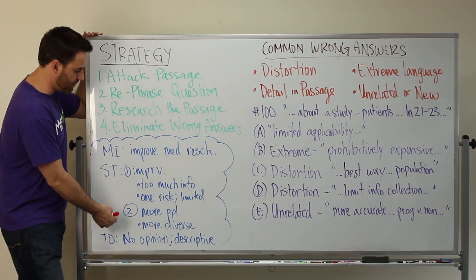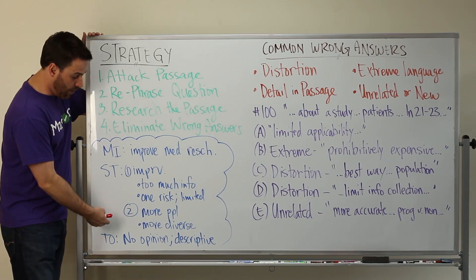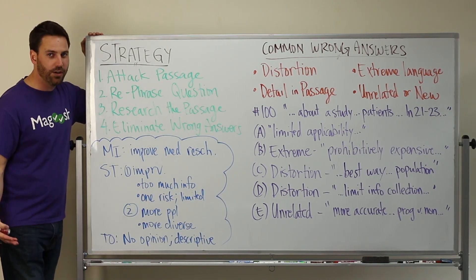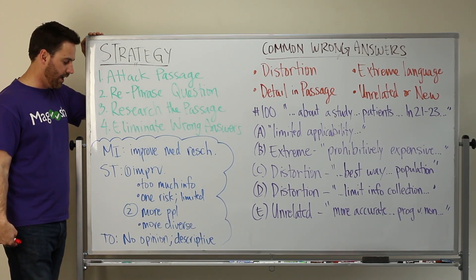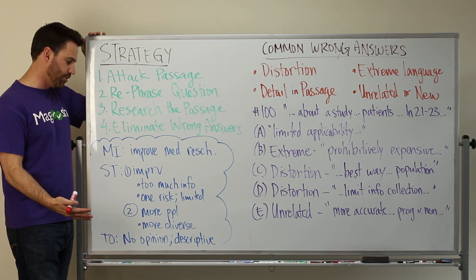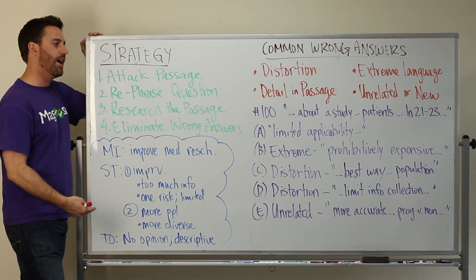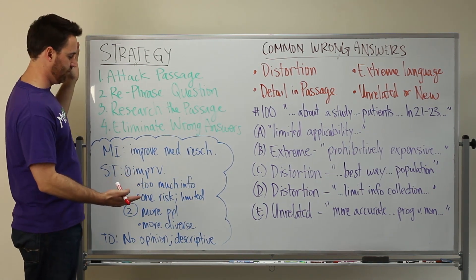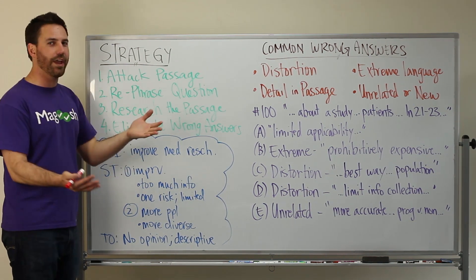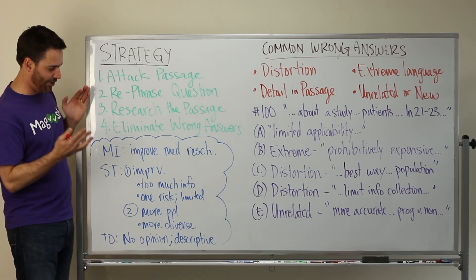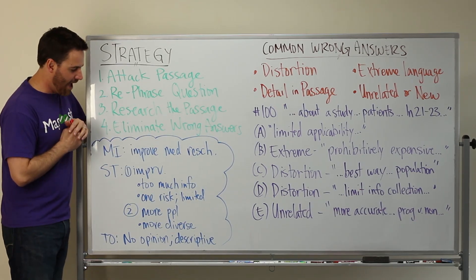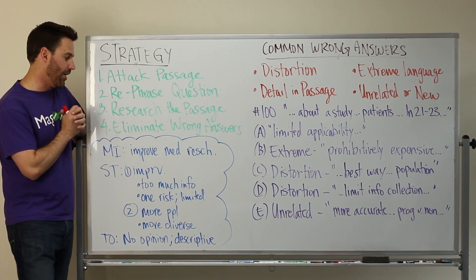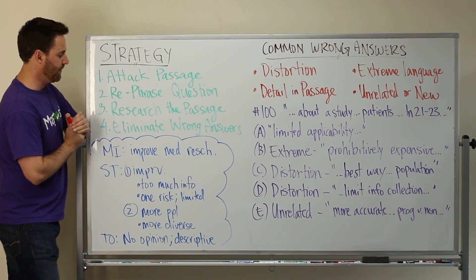We can do some research of the passage to see what they're talking about. So in paragraph two, they're talking about having more people in a research group so that it's more diverse. That means what we use now is less diverse — that's a good inference — and that there are fewer people. So that's a good place to start.